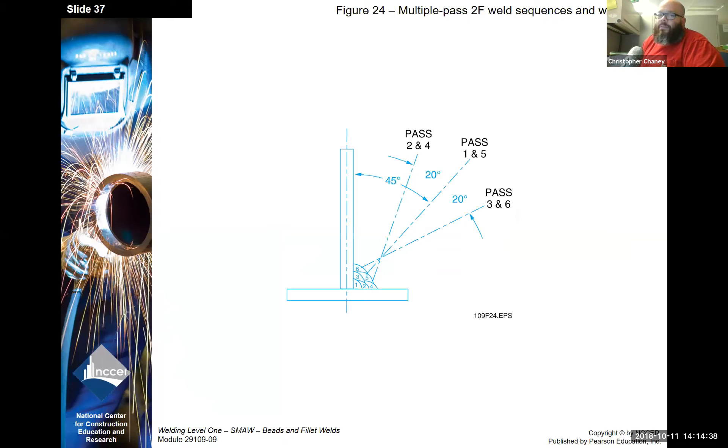Here it is. This is what's been causing most of the struggle for you guys here lately. This is the multi-pass fillet weld. This is an illustration of what angle your rod should be at and how the beads should kind of lay in there.